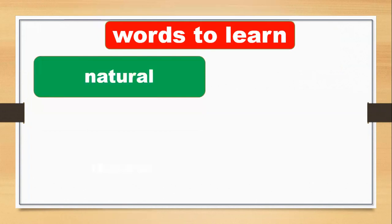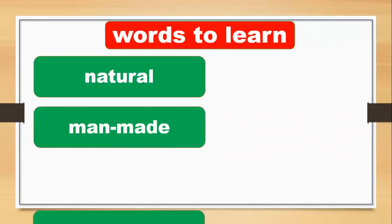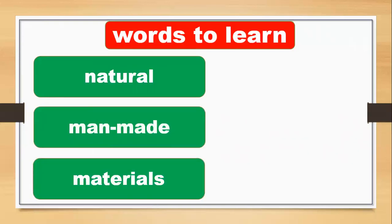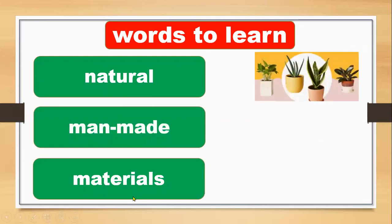Today you learn new words. The first one is 'natural', then 'man-made', and 'materials'. Natural things include trees, wood, and water — things that come from nature are called natural. Things that man created, like cars and tables, are called man-made.